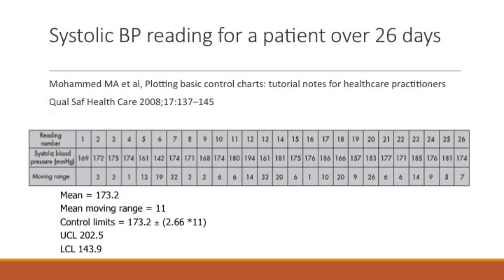Here's an example of systolic blood pressure for a patient over 26 days, taken from the Mujahid reading. The readings are listed sequentially 1 through 26, with blood pressure listed for each, starting with 169 and ending with 174. You calculate the moving range by looking at the differences between each of the readings: 172 minus 169 is 3, that's the first moving range value; 175 minus 172 is also 3, that's the next value. Remember, you use absolute numbers, so you're looking at positive numbers.